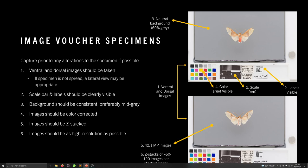Then we image the voucher specimens, done prior to any alterations or disarticulations if possible. I do a ventral and dorsal image for every specimen. If the specimen isn't spread, a lateral view may be better — as shown here, a lateral view gives a much better result than a dorsal or ventral view would, given the way the specimen was field-pinned and not prepared.